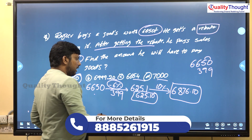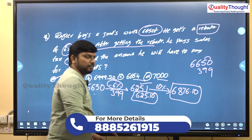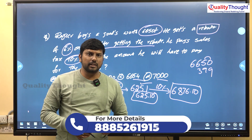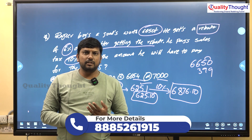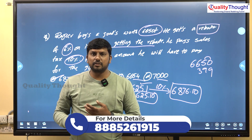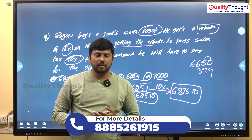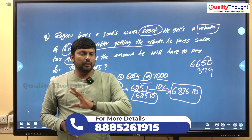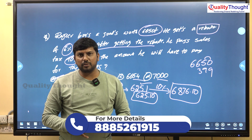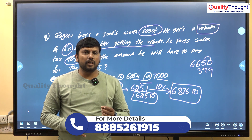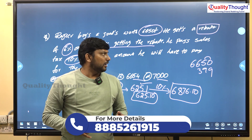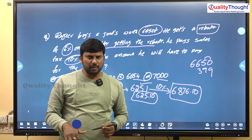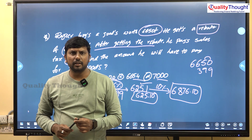The most important thing in aptitude is to complete the calculations efficiently. If you have clarity on the answer, you will close the calculations and save time. This covers the percentage topic with around 20 questions. The remaining questions will be discussed in the next session. Thank you.